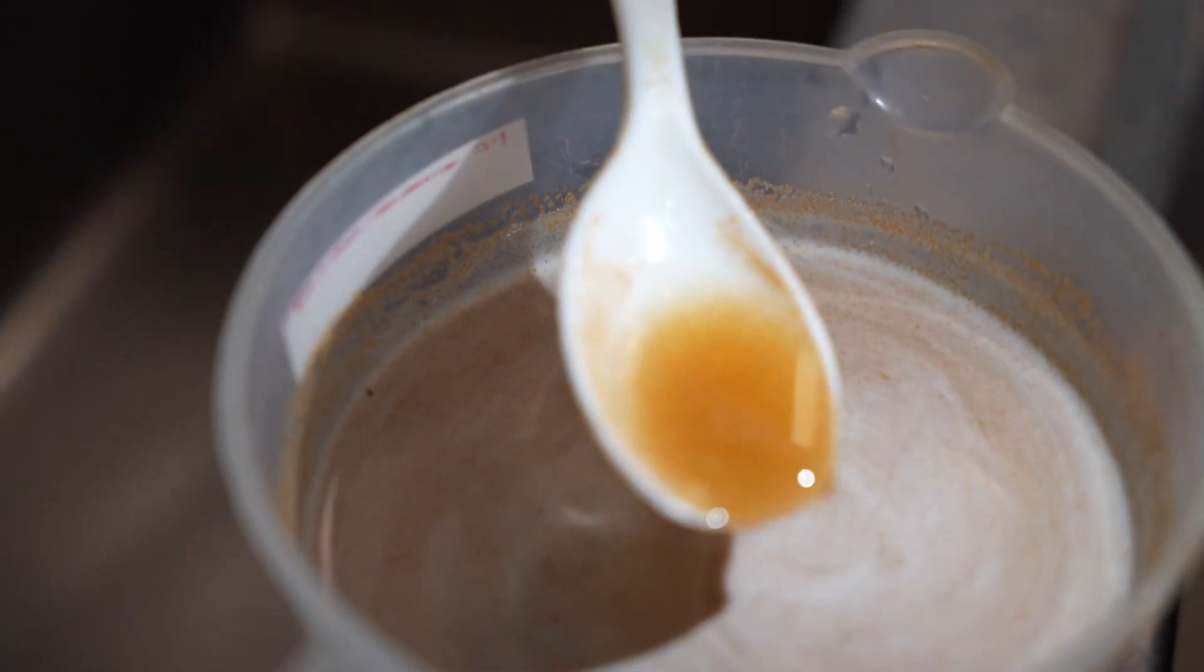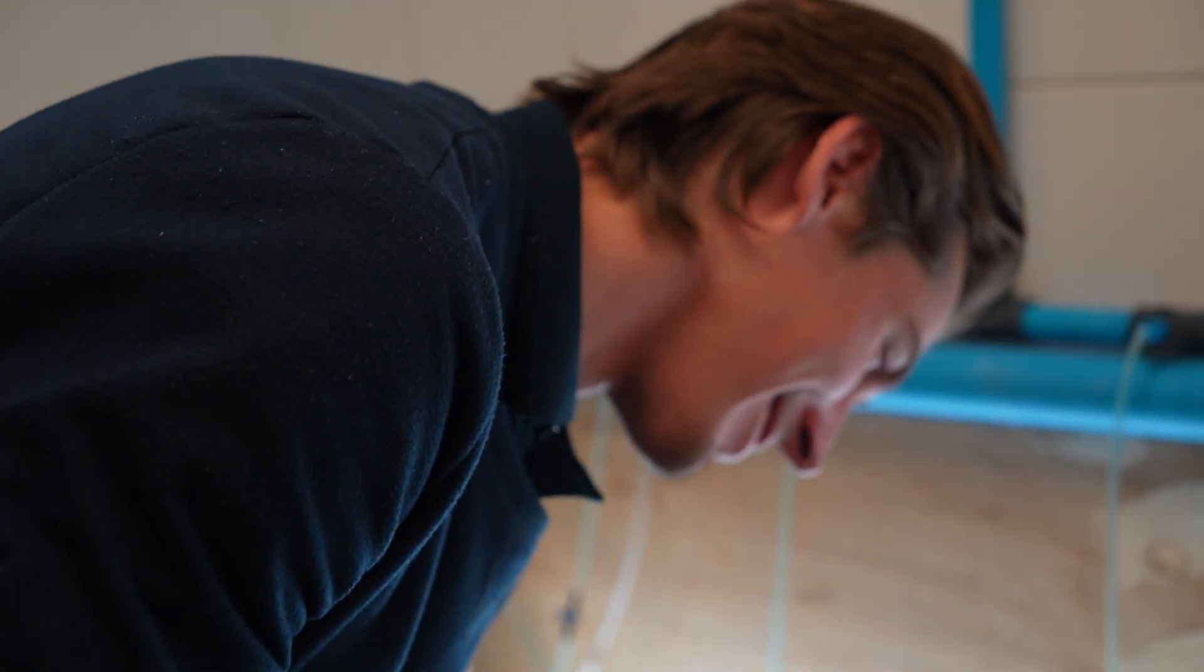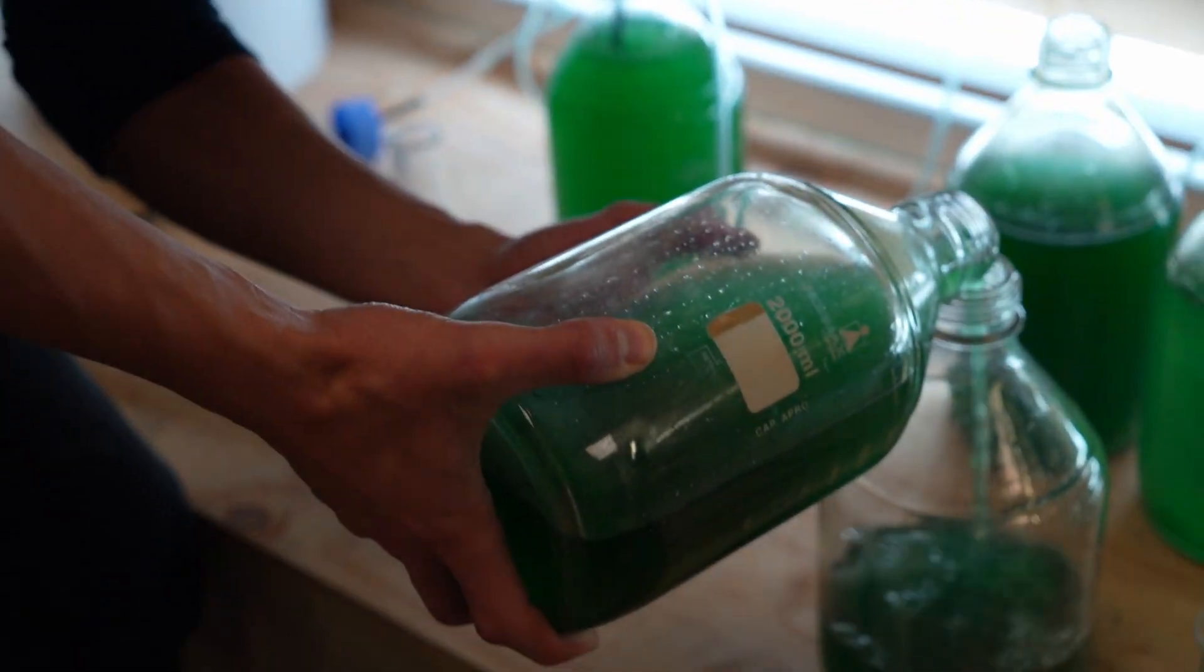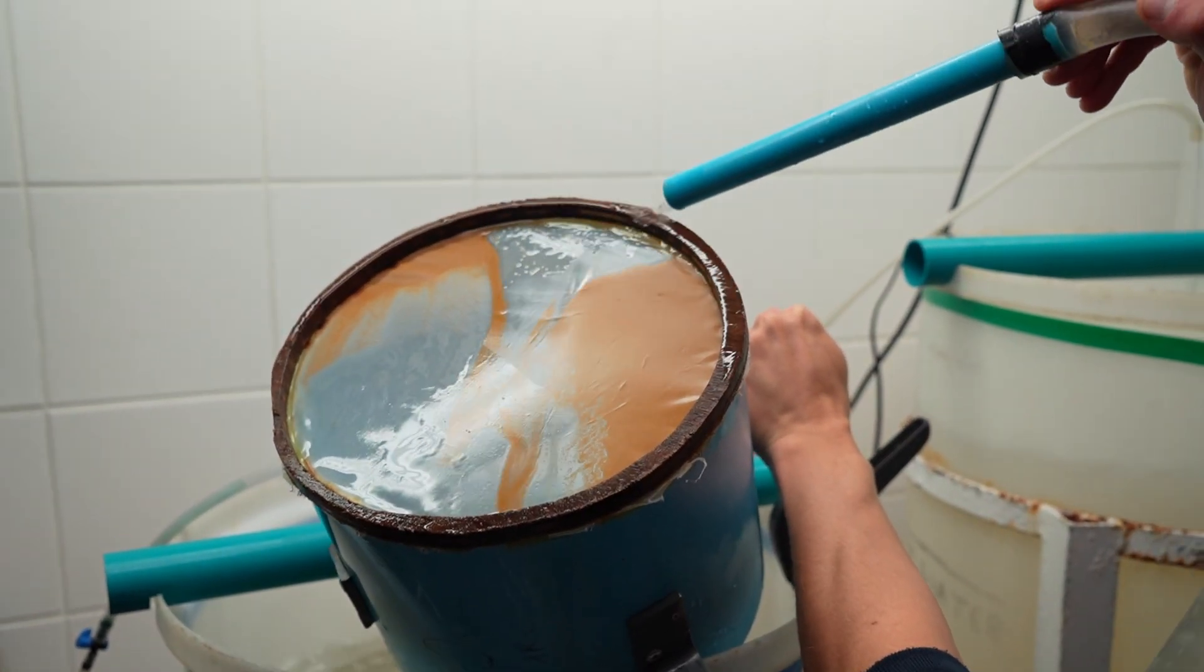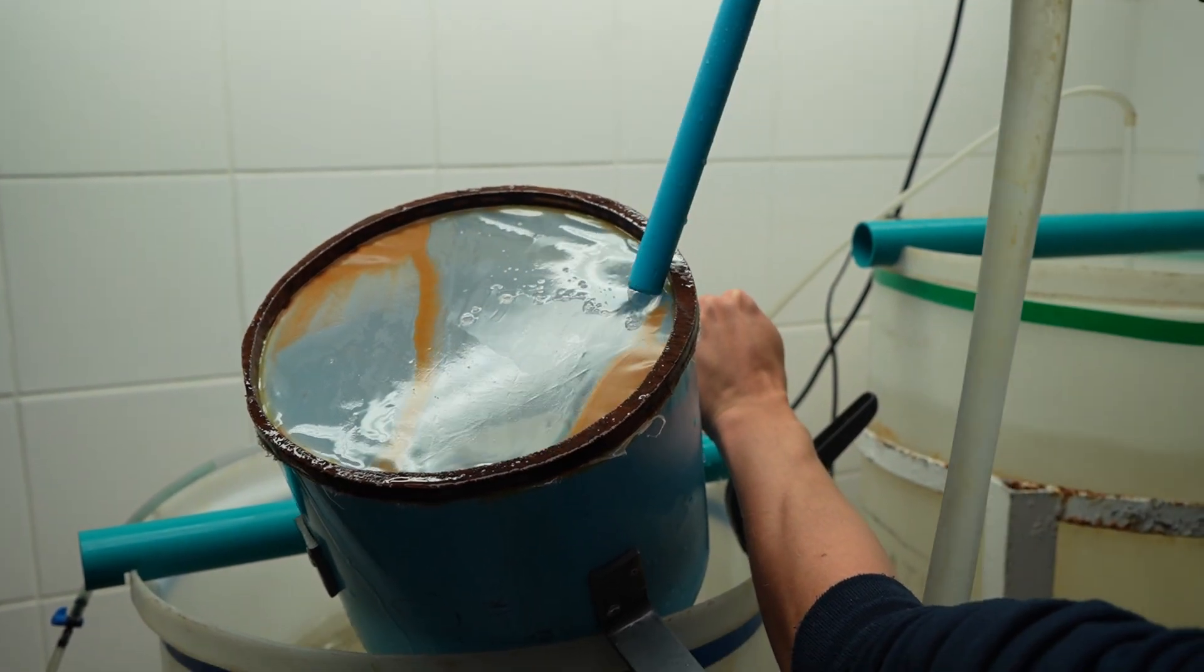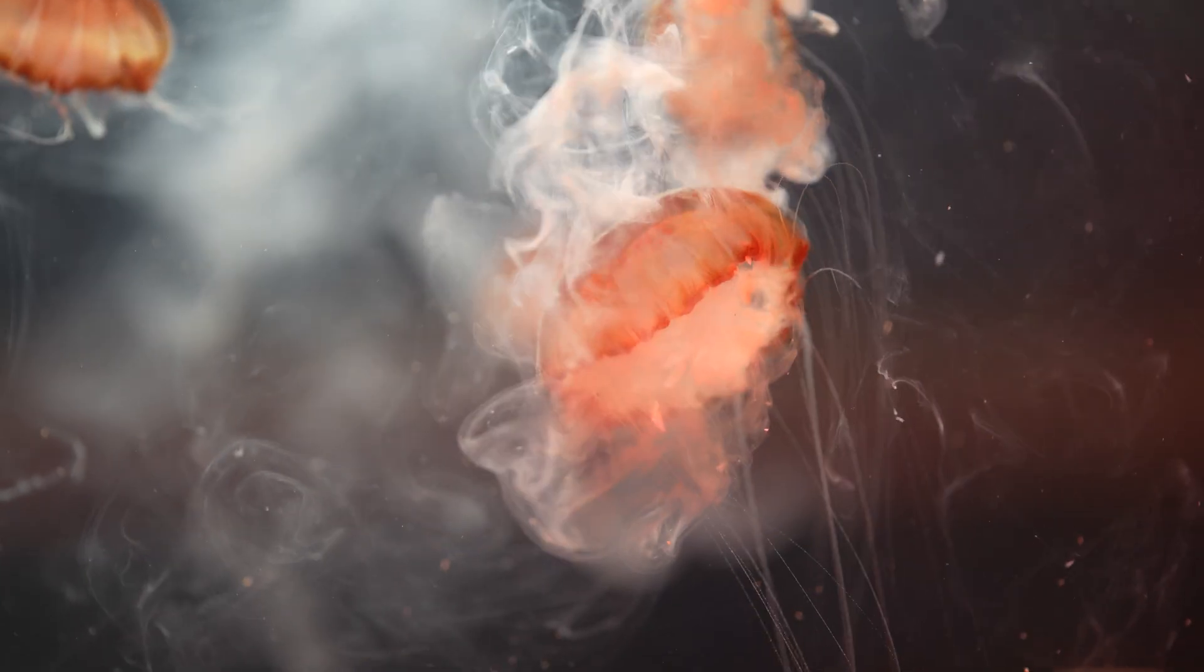What the culture lab is and what we do here is essentially we culture different organisms, and what that means is we maintain standing populations of these animals. That includes basically growing them, keeping them, feeding them, and then using them as a food source. The ultimate goal of the culture lab is to culture and grow little organisms as a food source for our animals in the aquarium.